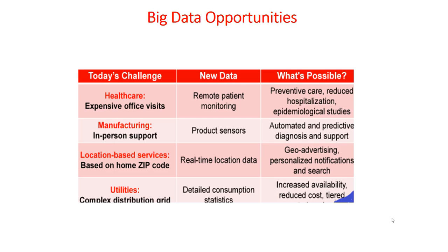For location-based services — like on zip code, real-time location data, geo-advertising — we talked about how you could send a special offer to a customer who's around your store. Utility companies face complex distribution challenges. With detailed consumption statistics, if utilities companies have up-to-date distribution stats, they can divert their resources to the much-needed areas and this way keep up with demand.